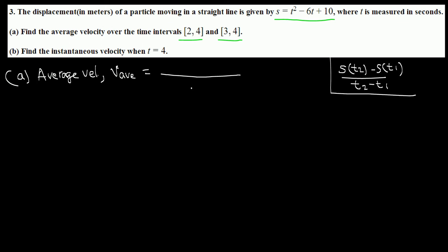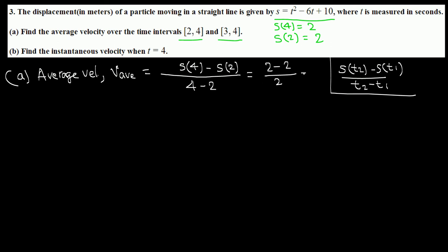That's the formula for average velocity, so that's [s(4) minus s(2)] over [4 minus 2]. We evaluate s(4) by replacing t with 4, which gives 2. We replace t with 2 for s(2), which also gives 2. So the rise is 0 and the run is 2, giving 0 over 2 — that's 0 meters per second, the average velocity over [2,4].